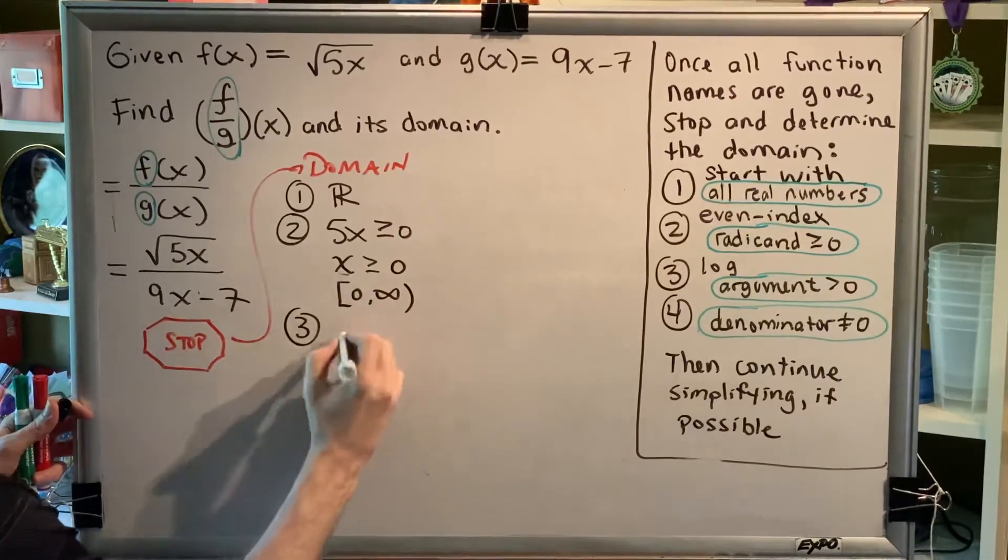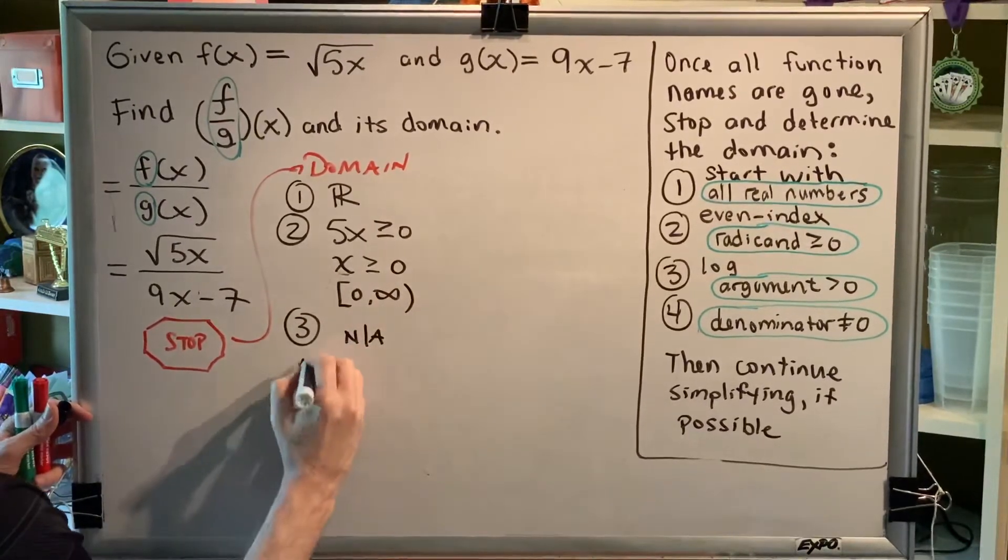Step three, log arguments greater than zero. There are no log arguments. Step four, denominators not equal to zero.